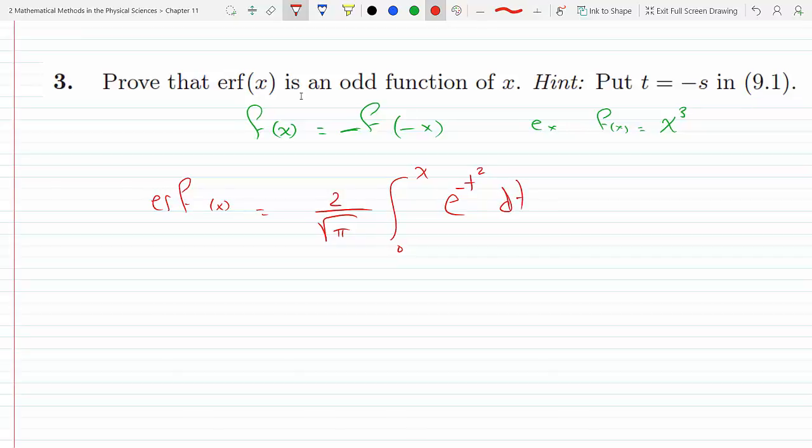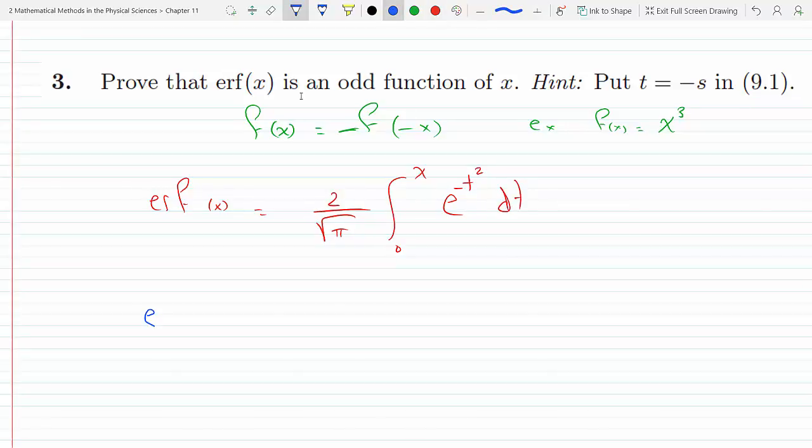Okay, well let's find out what erf of minus x is. And so if we do that, we will get 2 over square root pi from zero. We're replacing every x by minus x, so this becomes minus x, e to the minus t squared dt.